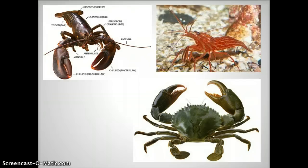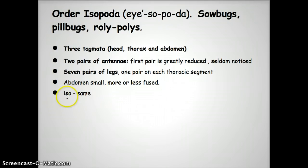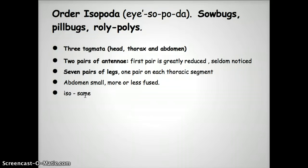Let's move on and look at the other group you're most likely to come in contact with — that's Order Isopoda. From dictionary.com, 'iso' means same. I believe it's because they all have the same amount of legs. They have seven pairs of legs, one pair on each thoracic segment, and two pairs of antennae.